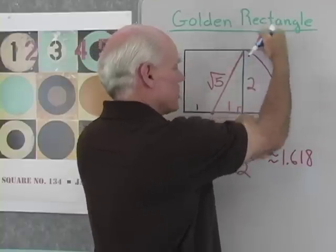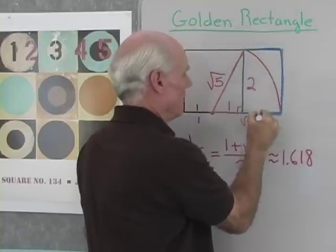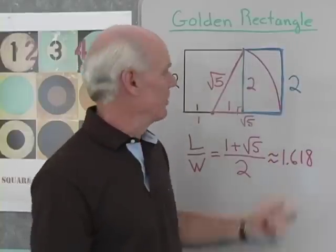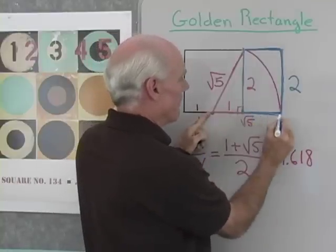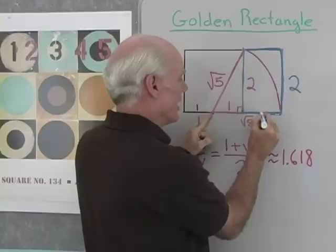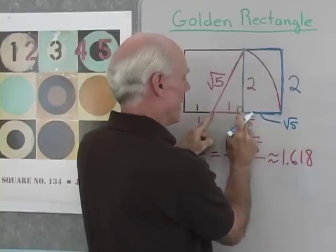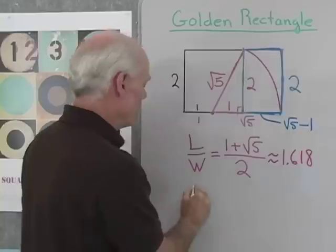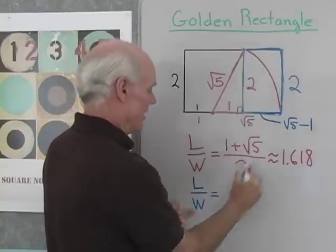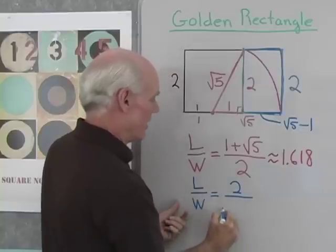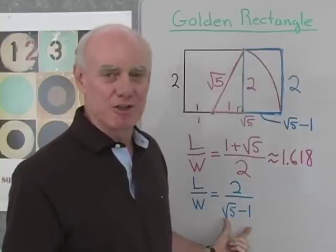So the big one is a golden rectangle, but so is this little one right here, and we can show that by finding the ratio of length to width. In the little blue rectangle, the ratio of length to width — well, this is the length and this is the width. This whole length right here is square root of 5, and that length is 1, so this inside length must be square root of 5 minus 1. So if I find the ratio of length to width in my little blue rectangle, I get the length of 2 divided by the width of √5 minus 1. This should come out to be (1 + √5) / 2.